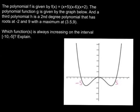The polynomial function g is given by the graph below. The third polynomial h is a second degree polynomial that has roots at -2 and 9 with a maximum at the point (3.5, 9).